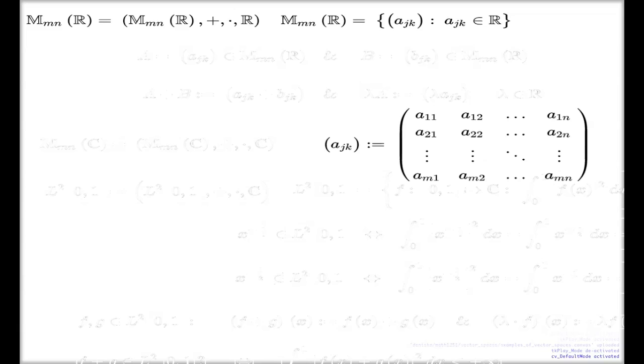So, because it's difficult to write or to type this large object every time, mathematicians just suggested the following abbreviation. First index is a row index, second index is a column index. So the collection of all these matrices, all of these tables of numbers with entries from real numbers.